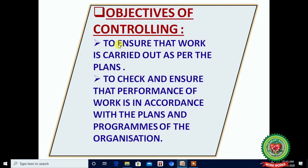Objectives of Controlling: Number one — to ensure that the work is carried out as per the plan. Controlling is required to check whether the work is according to your plan or not, and to ensure that the performance of work is in accordance with the plans and programs of the organization. This means controlling is required in the organization to check different departments are working according to set goals and targets.